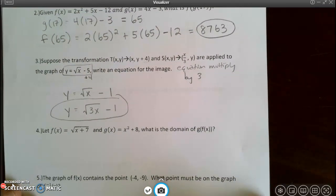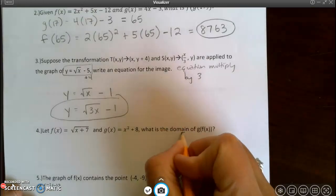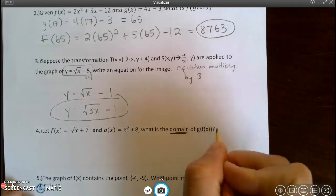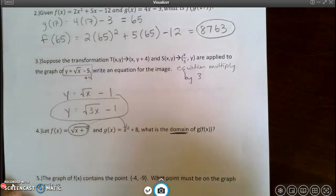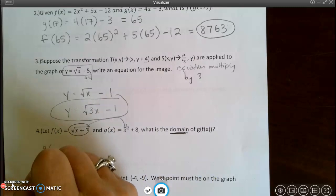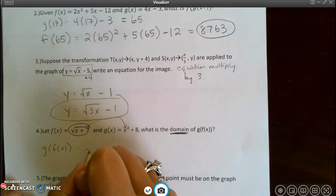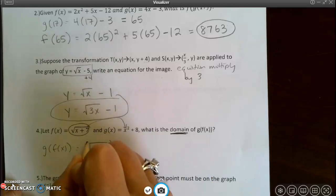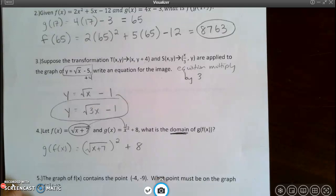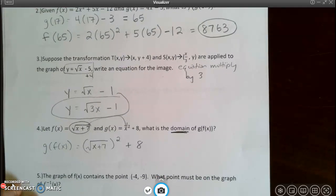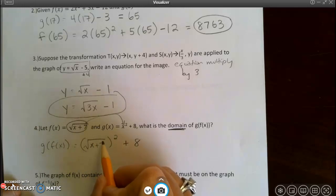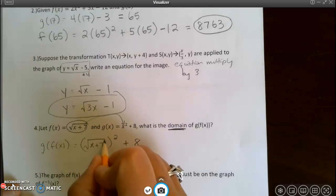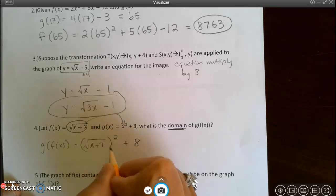For number 4, I'm given two functions and I'm asked to find the domain of g at f of x. So I'm going to take f(x) and put it in right here. So g at f of x is equal to the square root of (x plus 7) squared plus 8. Now, I realize that when you square a square root it gets rid of it. However, because that square root is there to begin with, we have to take it into consideration. And we know that underneath of a square root, we have to have only positive or 0.